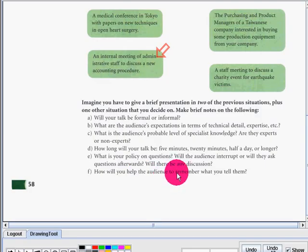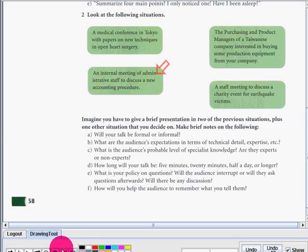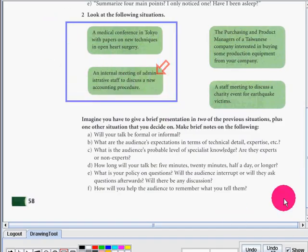How will you help the audience to remember what you tell them? So let's say you chose these two. You have to prepare your presentation on those topics. You have to answer the questions in doing your presentation. You have to consider the given questions. You can say that your talk would be informal so that people can easily understand, since this is about medical or heart surgery and a new accounting procedure.